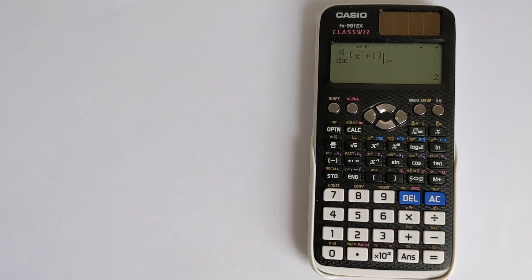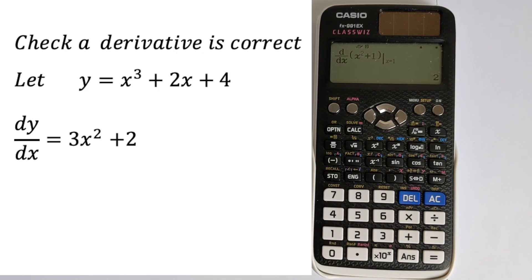If you're unsure about your derivative, you can use this calculator to check and prove that you've got the right derivative. So let's say we had a function like y equals x cubed plus 2x plus 4, and we thought that the derivative was 3x squared plus 2. This is, of course, the right derivative,